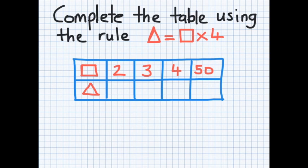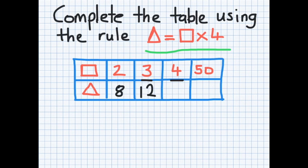Here we need to find the value of triangle. Looking at the rule again: triangle is equal to square times four. So we've got square which is two, times four equals eight. Here we have three times four which would be twelve, four times four which is sixteen, and a larger value: fifty times four, which is two hundred.